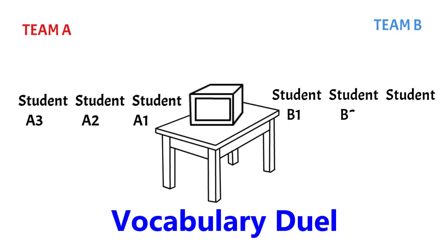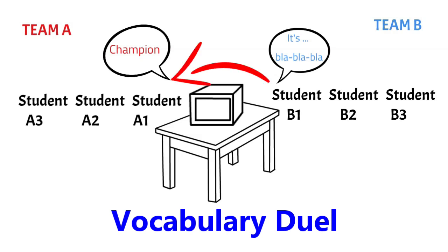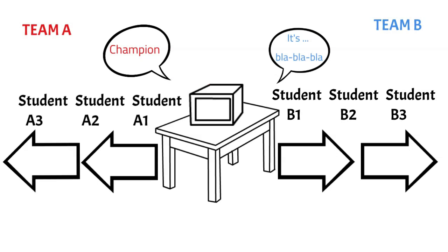A student who is standing first in the line, let us take student A1 from team A, takes the first shot at student B1 by picking up one card from the box and reading it to student B. For example, champion. Student B1 should translate the word into their native language and take a shot at student A1 with another card from the box. If their answers are correct, they go to the end of the line to let students A2 and B2 take part in vocabulary duel. But if one of them makes a mistake, the student is out of the game. Don't forget to ask your students if the players cannot remember the meaning of some words, remind it to your students and put the card back into the vocabulary box.